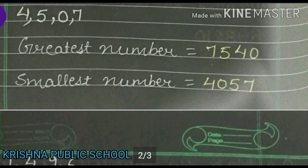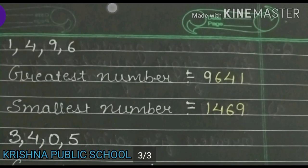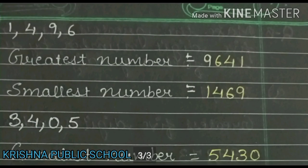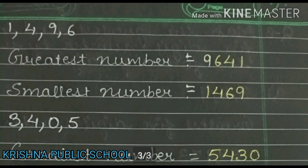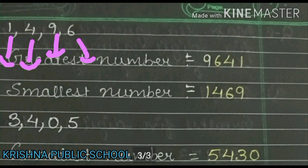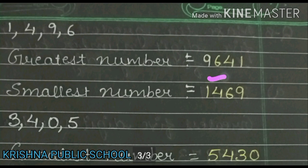Now we see part number D. We have given digits 1, 4, 9, 6. For the greatest number, arrange in descending order: 9, then 6, then 4, then 1. So our greatest 4-digit number is 9,641.